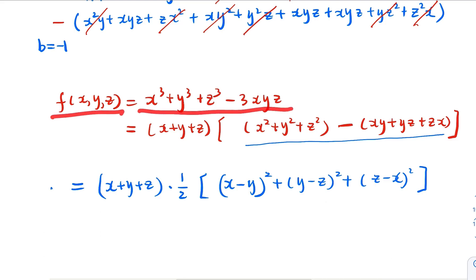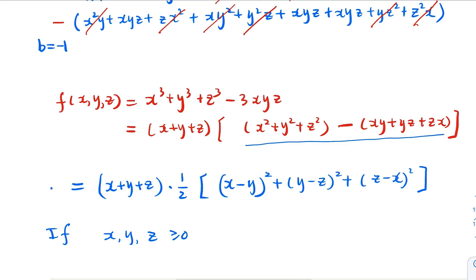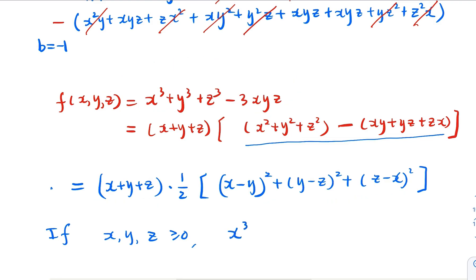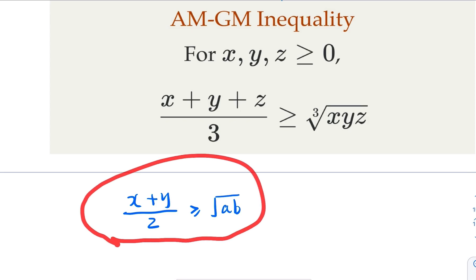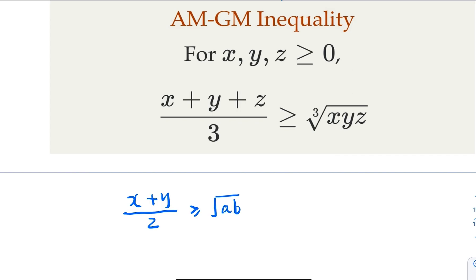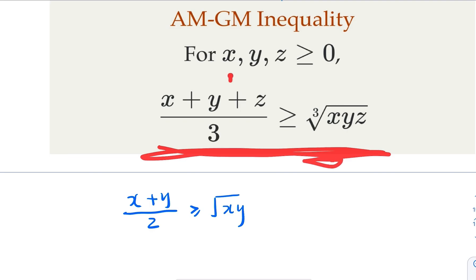In other words, x cubed plus y cubed plus z cubed is greater than or equal to three times xyz. This is actually the AM-GM inequality for three variables. For two variables, the standard AM-GM inequality holds similarly. For three variables, we have this inequality: the arithmetic mean is greater than or equal to the geometric mean.